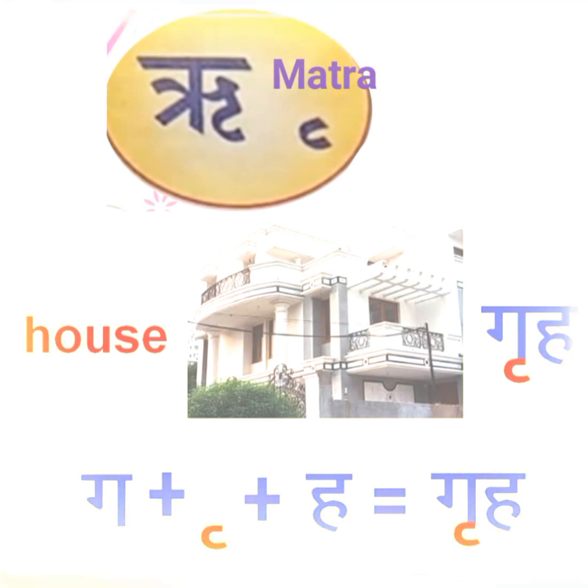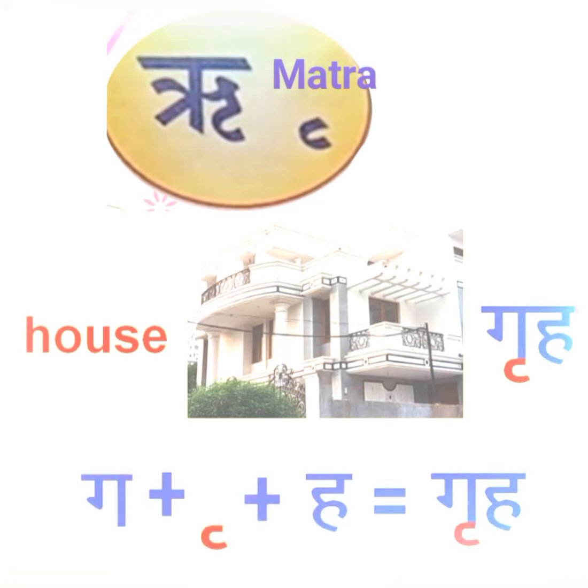If we add re-matra to the word ga, ga becomes grh. Add ha — grh. Grh means house, ghar.